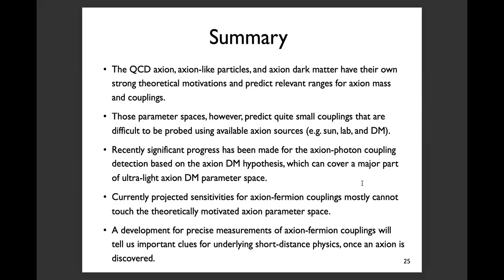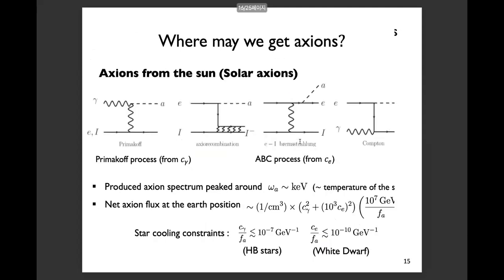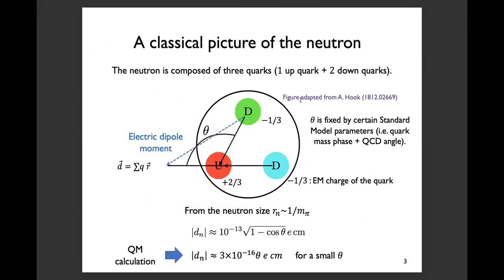Any questions or comments? Thank you very much for your nice talk. We may have some questions. I like your plot on the set angle for neutron EDM — a kind of intuitive picture. It's from Anson Hook's paper. This is a nice understanding of the strong CP problem, a kind of classical picture showing how to make the quarks align in one direction.